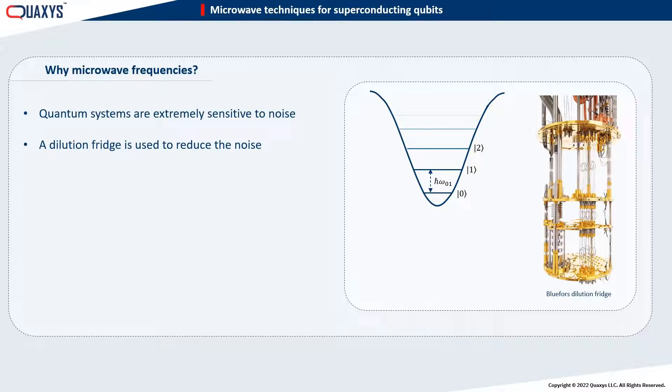Now let's roughly calculate the frequency associated with the existing thermal energy in the fridge. The thermal energy is equal to Boltzmann's constant times the temperature. The frequency associated with this energy is equal to the Planck's constant times the frequency. A standard dilution fridge can reach a temperature of 20 mK corresponding to a frequency of 0.4 GHz.